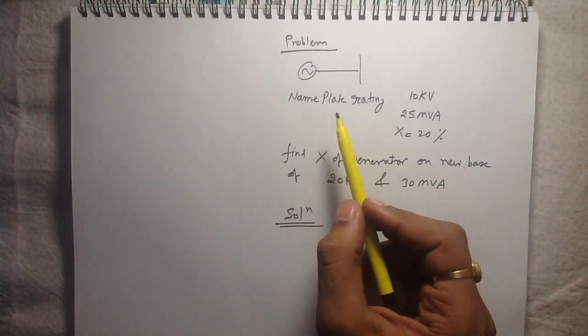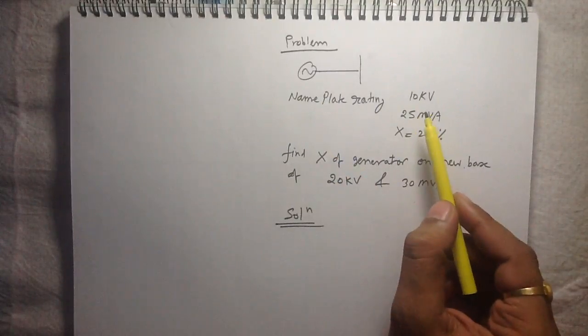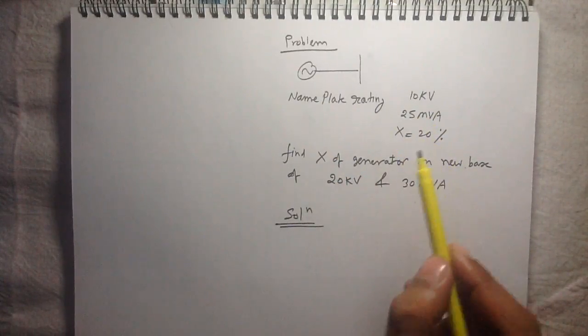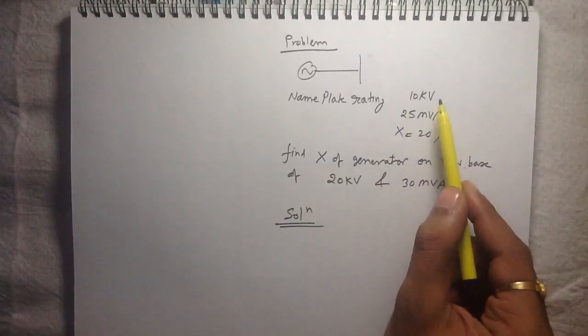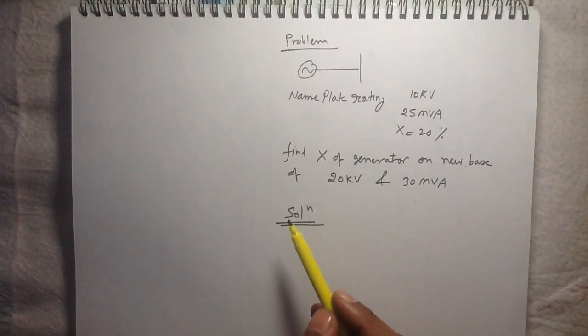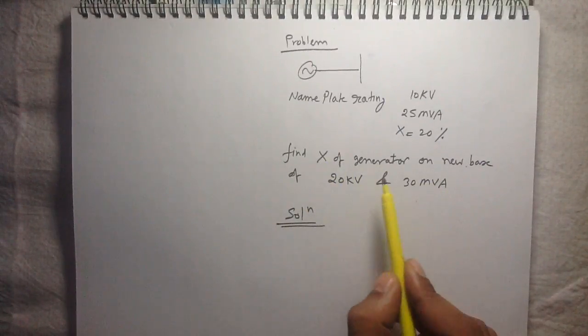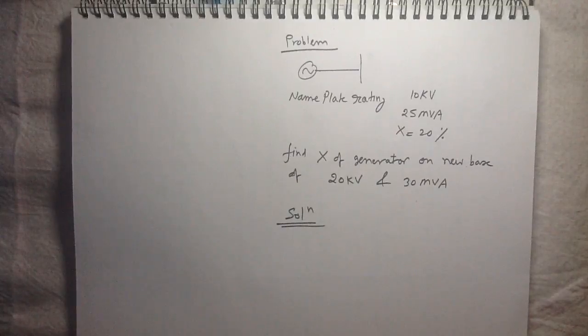In this problem, the nameplate rating of the synchronous generator is given as 10kV, 25mVA, and the reactance is 20% on these base values. We have to find out the reactance of the generator on a new base of 20kV and 30mVA.